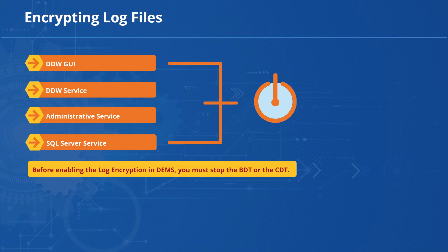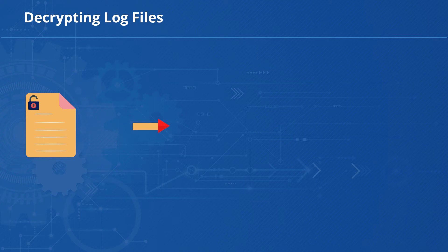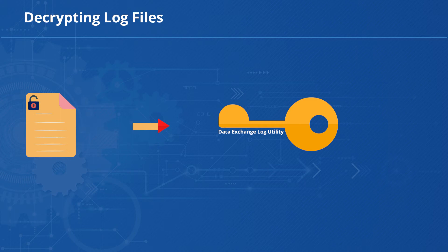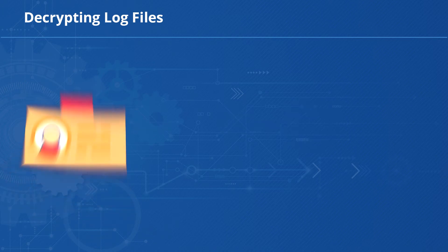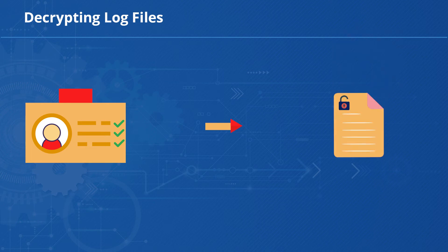Any activities recorded in the files will be encrypted. You can also decrypt encrypted log files by using the Data Exchange Log Utility, which is a Windows application. Each Windows component of Data Exchange contains this log utility, which can be used to decrypt the log files of any DE component. Let's see how to use the Data Exchange Log Utility to decrypt a log file. Before moving on to the decryption process, you must ensure that you have the privilege to decrypt the log files. Only a user with the privilege is able to perform the decryption of the encrypted log files.